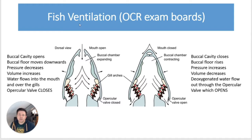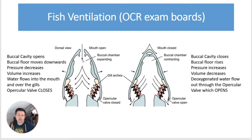Looking at the left-hand view, we can see that the mouth is open and the buccal chamber expands — because the buccal floor moves down, this reduces the pressure inside the mouth and the volume increases, so water flows through the mouth and over the gills. Notice the opercular valve: the operculum is the outside bony flap covering the gills, and at this stage the opercular valve is closed.